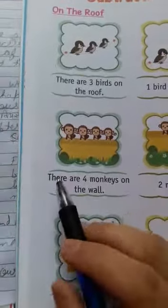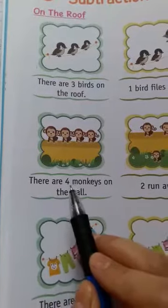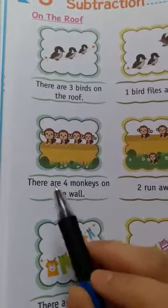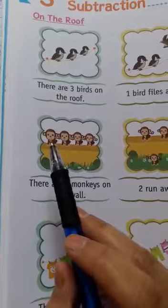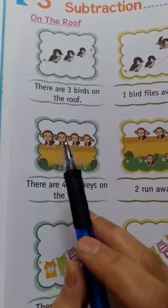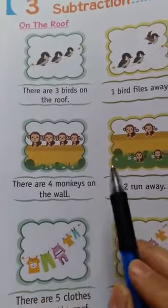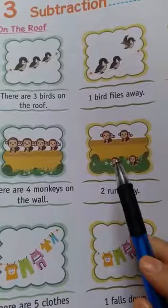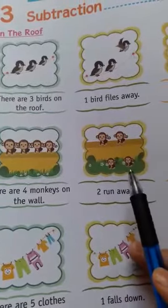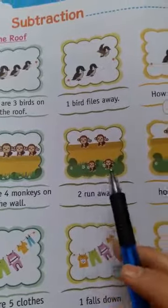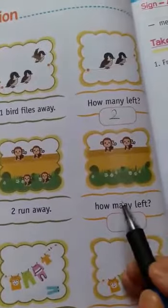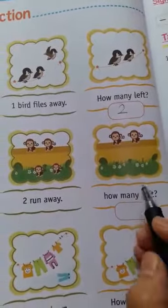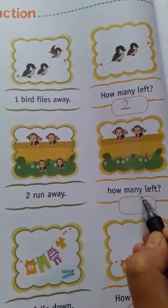Next, there are four monkeys on the wall — one, two, three, four. Two run away. How many are left? One, two. Two monkeys are left.